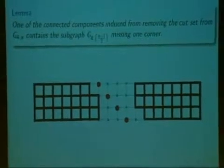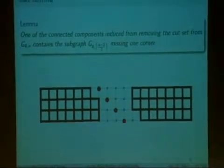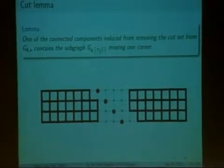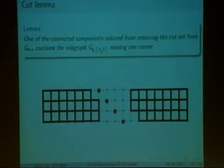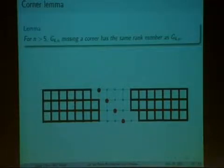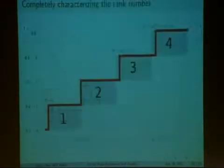So first, we have what's called the cut lemma. The cut lemma states that given any configuration of cuts at vertices, once you remove them, you're left with two halves, one of which will have to have a grid graph with the following dimensions, except it will be missing a corner. On that note, we also have the corner lemma, and the corner lemma states that for a sufficiently long grid, removing the corner will actually not affect the rank number. It will stay the same.